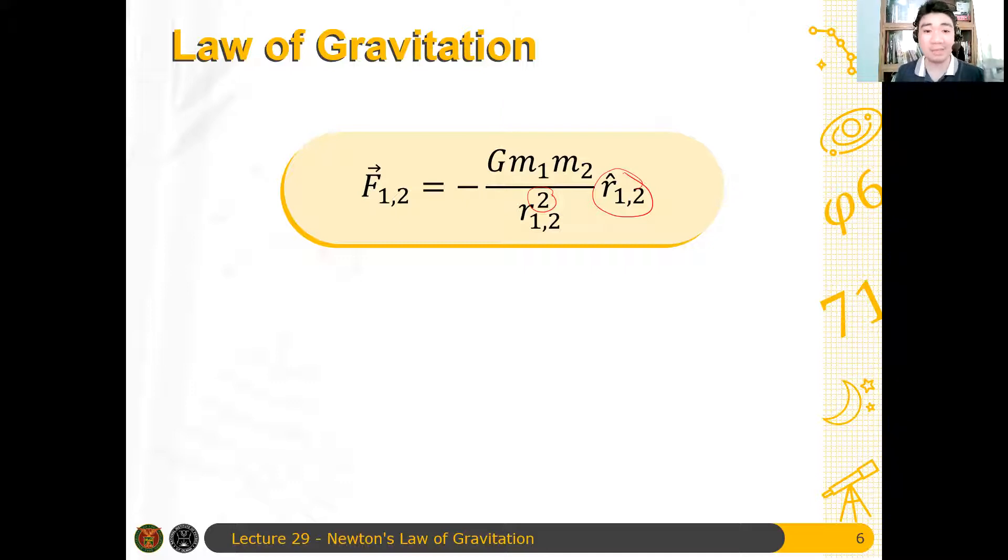So the negative sign here indicates that the force is attractive, and therefore the tendency of the two masses is to be attracted to each other. That is a characteristic of gravitational force. The gravitational force is always attractive.